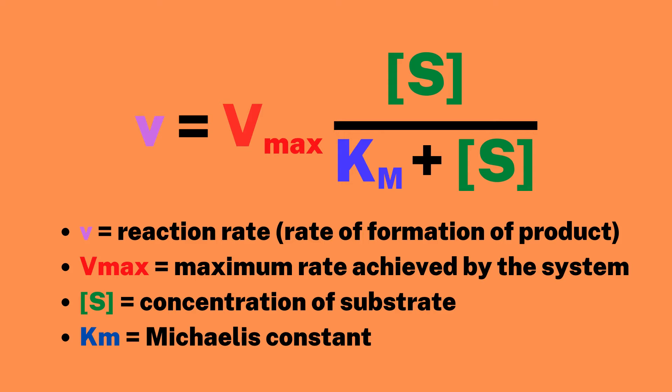V is the rate of the reaction as measured by the formation of product. Vmax is the maximum velocity of the reaction, which is the rate of the reaction when the enzyme is fully saturated with substrate.